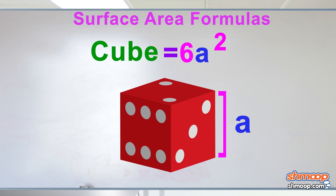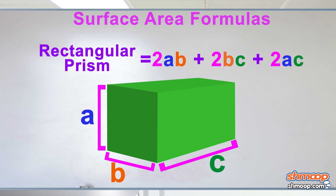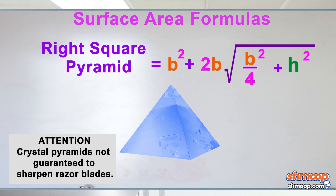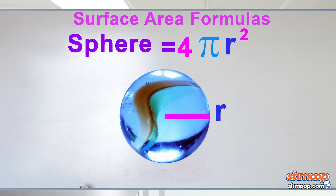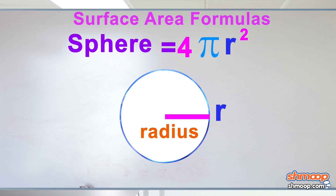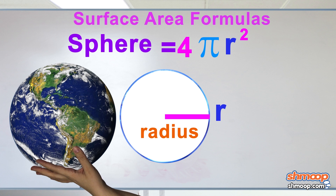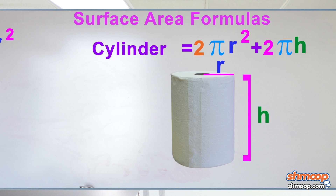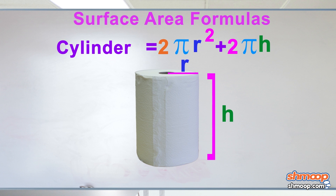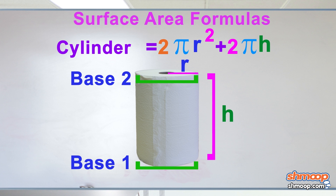Each shape has a basic formula that goes with it, like this stuff over here. And you have to know that for, say, this razor-sharpening crystal pyramid, this is the base, and this is the height. And that this line represents the radius of the marble in this formula. And that this line is base one, and this is base two.